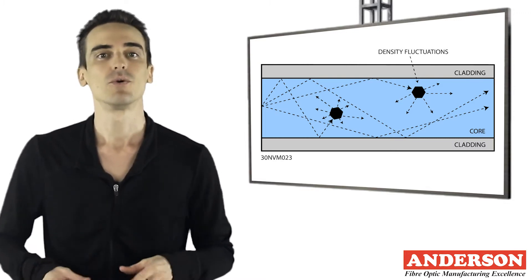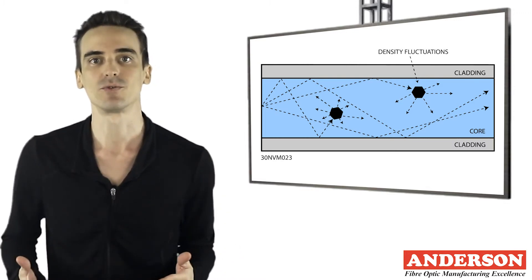Of these, Raman scattering is the inelastic scattering of a photon by molecules which are excited to higher vibrational or rotational energy levels. Raman scattering is an important issue in dense wave division multiplexing systems.